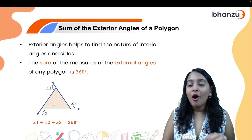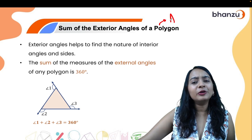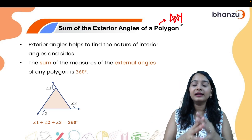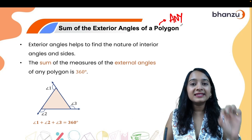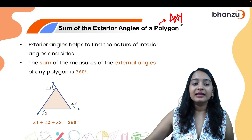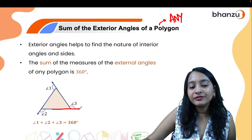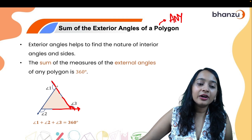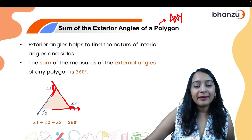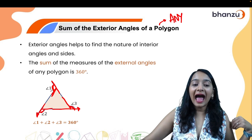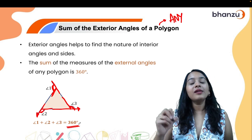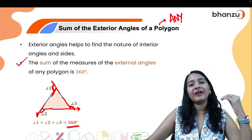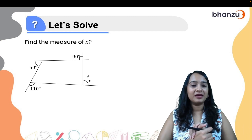Now let's talk about the sum of the exterior angles of a polygon. This applies to any polygon — pentagon, hexagon, octagon, triangle, any polygon at all. An exterior angle is formed by extending one side and measuring the angle between the extended side and the adjacent side. The sum of all exterior angles of any polygon is always equal to 360 degrees.